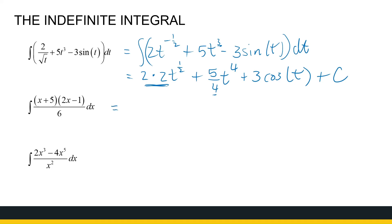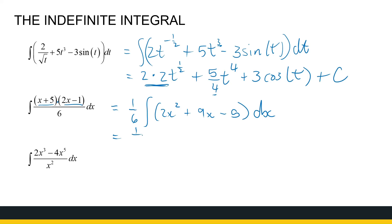Stop before integrating the next one — don't rush in. At this stage we have no rule for the product of two functions; dealing with those comes later. But here we can simply multiply out the brackets. Take 1 over 6 out as a constant, then expand to get 2x squared plus 10 minus 1 plus 9x minus 5. Now we can find the antiderivatives: 2 over 3 x cubed plus 9 over 2 x squared minus 5x, plus c.